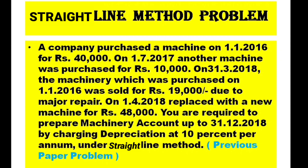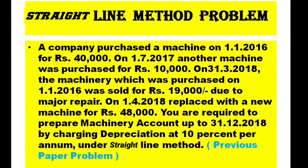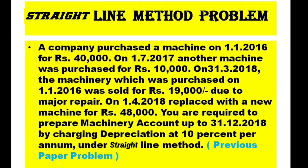You are required to prepare the machinery account up to 31-12-2018 by charging depreciation at 10% per annum under the Straight Line Method. If you want a journal entry, when we purchase a machine, machinery account is debited to bank account. That's how it started.